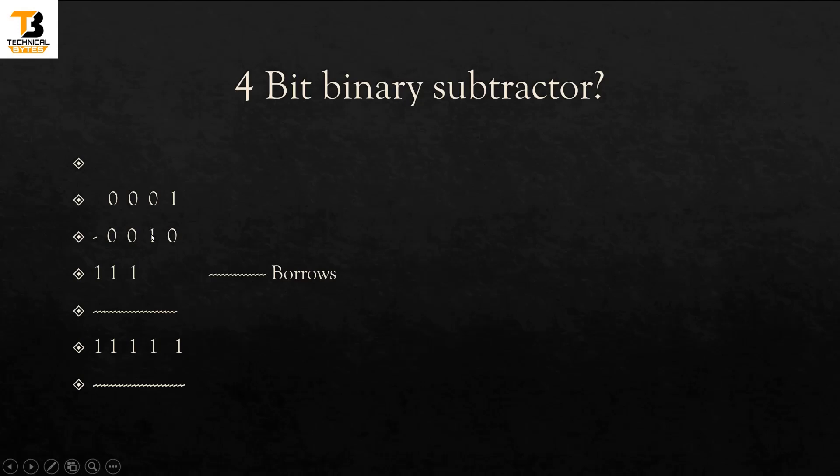0 minus 1, so this will be 1 and the borrow will be generated here. Now firstly we need to subtract these two, 0 minus 0, and this borrow should be subtracted from it. So 0 minus 1 is 1. Again borrow is generated here. Similarly at this place, 0 minus 0 is 0, and 0 minus 1 is 1, and borrow is generated again here.